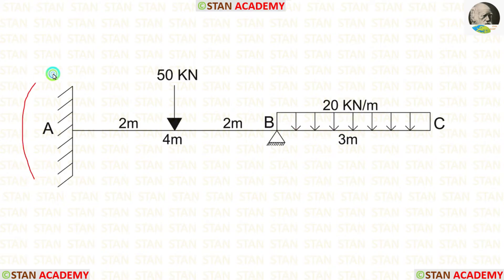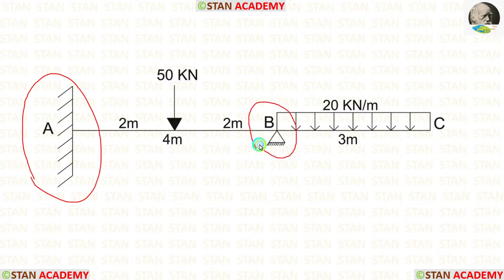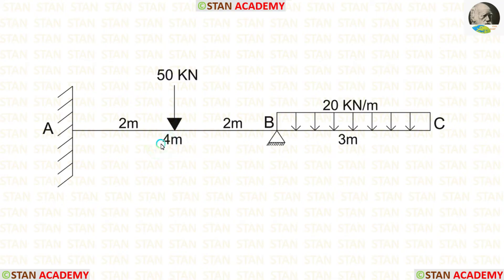At point A, there is a fixed support. At point B, there is a hinged support. Span AB is 4 meters long, and the overhanging span BC is 3 meters long.